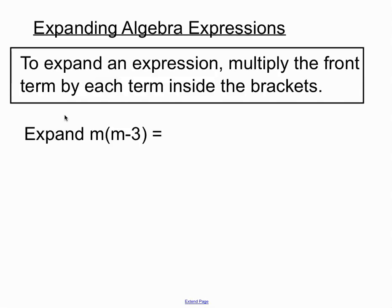Let's have a look at another example here. This time we've got a letter out the front. So that M needs to multiply by that first term and we write down our answer. Then that M multiplies by that second term. Let's have a look. Now M times M, when the same letters are multiplying with each other, that creates an M squared.